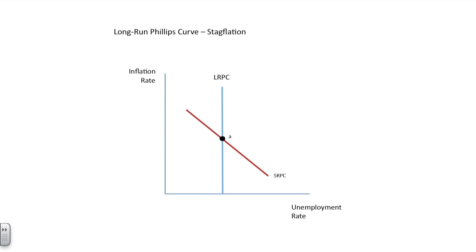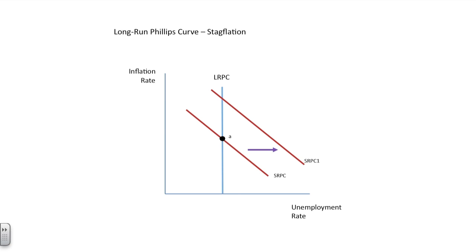Finally, let's look at the long-run Phillips curve with the conditions of stagflation. Stagflation is a result of a contractionary economy combined with high prices. What I need to be able to show are higher prices due to some sort of a supply shock combined with higher unemployment. The only way to resolve this condition on this graph is to shift the SRPC to the right, creating a whole new menu of options with a new SRPC curve. We want higher prices and higher unemployment, putting us to the right of long run.